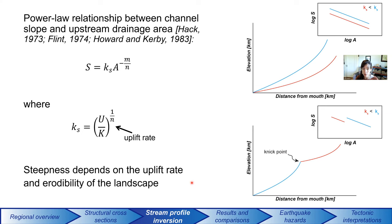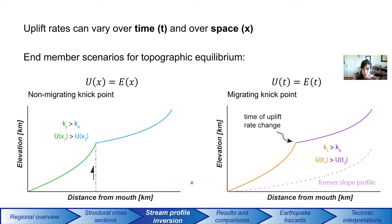If we see a change in steepness along one river — a nick point — the lower steeper reaches may be equilibrated to a faster uplift rate than the upper reaches. This nick point records the time at which the uplift rate changed. Uplift rates could vary over time or over space. If uplift rate varies over space — for example across a fault — then the nick point could be the location where you have different uplift rates on different sides of a tectonic structure.